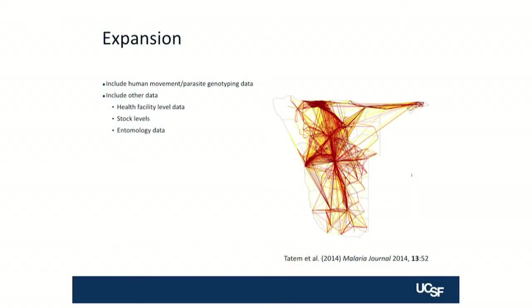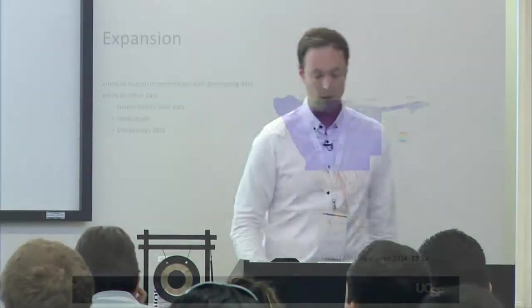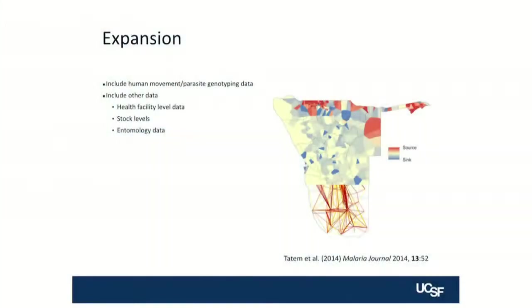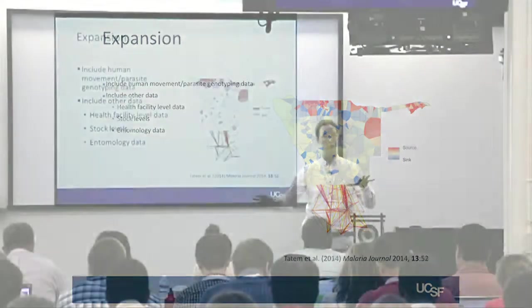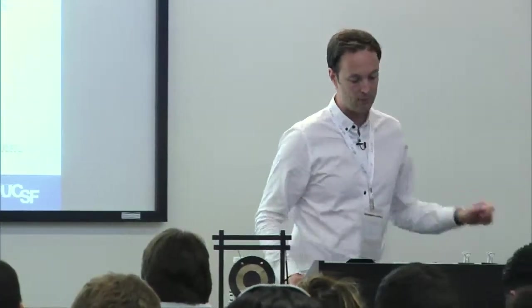We also want to think about other data that can be fed into this. There's been a lot of work by colleagues at the University of Southampton — Andy Tatum and others — using cell phone records to infer human movement. Every time someone places a call or sends a text, you can locate that phone to a tower; if you aggregate that data, you can look at movement patterns. This is human movement in Namibia. If you've got information on where people move, you can overlay a risk map, and that allows you to start to look at sources and sinks — so you might have what look like two hotspots, but one is just feeding the other, and hitting the source with an intervention could have a knock-on effect in the sink.